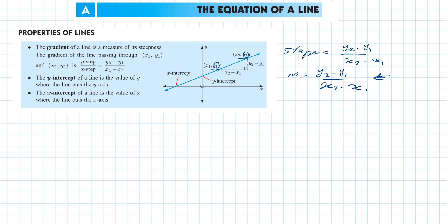Next, we're going to talk about the y-intercept concept. The y-intercept is the intersection point between the y-axis and the line, and we determine it while x equals 0. So when x equals 0, you determine the y-intercept. For x-intercept, you determine it while y equals 0. The y-intercept of a line is the value of y where the line cuts the y-axis.